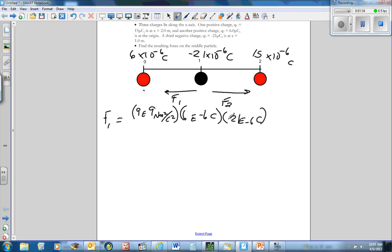Notice I didn't put the negative in for the 21 because all I need to know from that negative is that they're attractive and it's going to pull to the left. And that's all over how far apart are they? They're 1 meter apart because this is 0, that's 1 meter. And I'm going to square that.